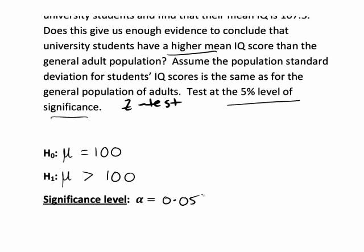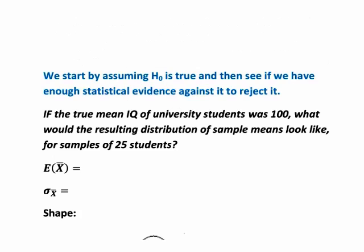We're testing at the five percent level of significance, so the significance level alpha is 0.05. The basis of hypothesis testing is we start by assuming the null hypothesis is true, and then we look to see if our sample data gives us enough statistical evidence against H0 to allow us to reject it.